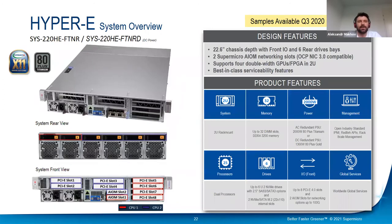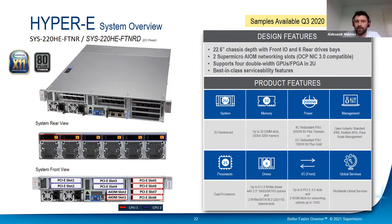I want to highlight two of our most powerful Edge platforms: Ultra-E and Hyper-E solutions. These are short-depth systems, only 22.6 inches — less than 60 centimeters — with front IO access, so all Ethernet adapters and other cards are accessible from the front side. These servers have the functionality of high-performance Supermicro Ultra and Hyper families, but can also be used in more rough environments.